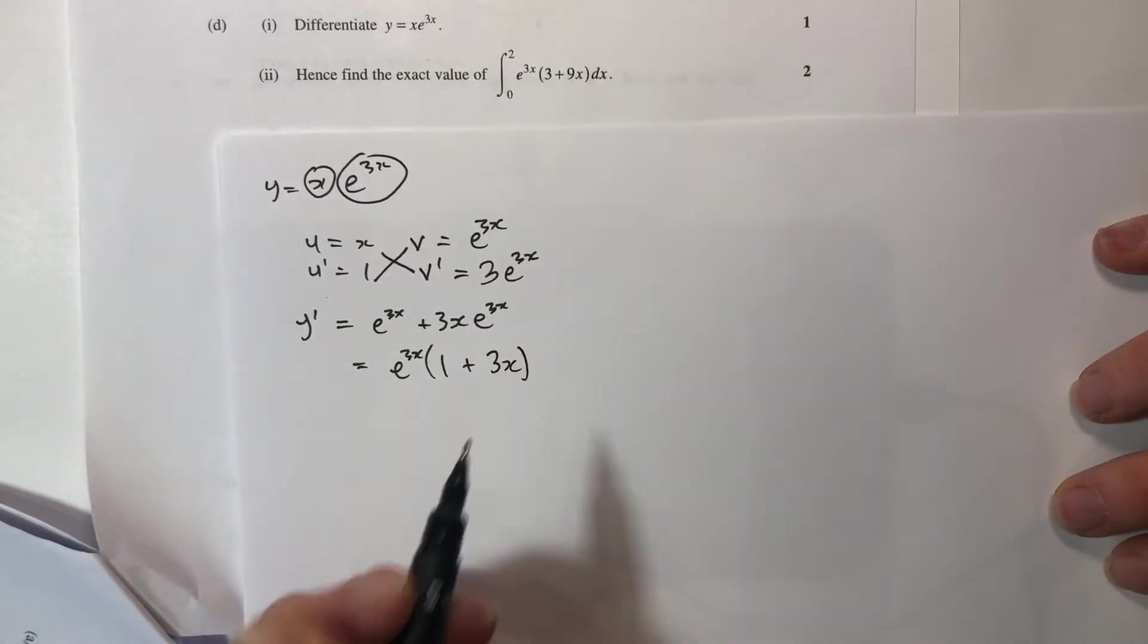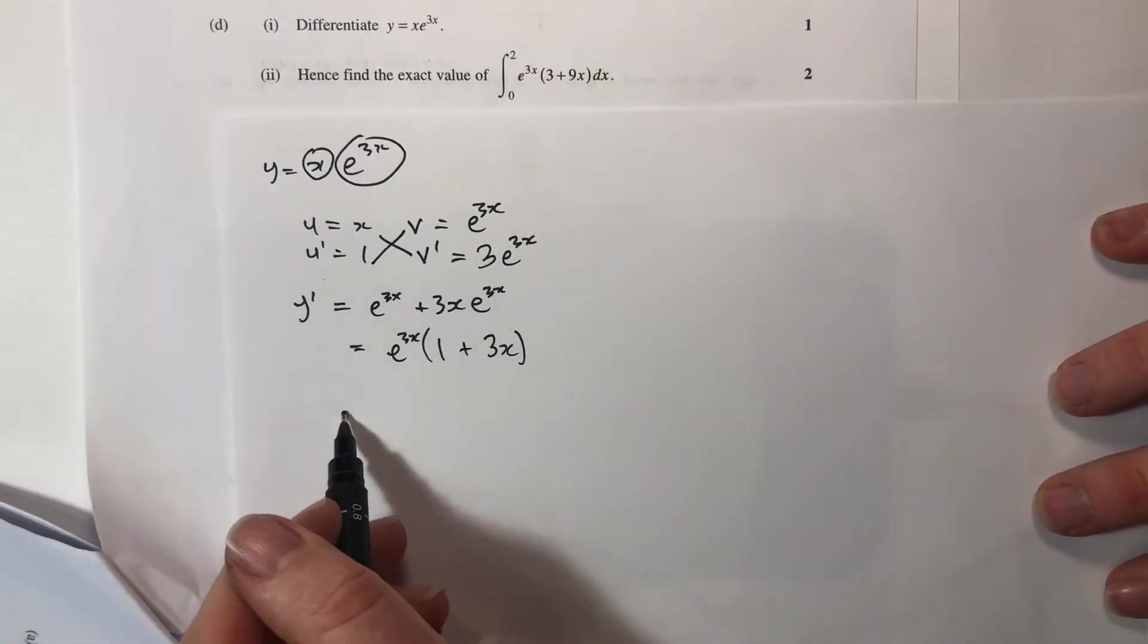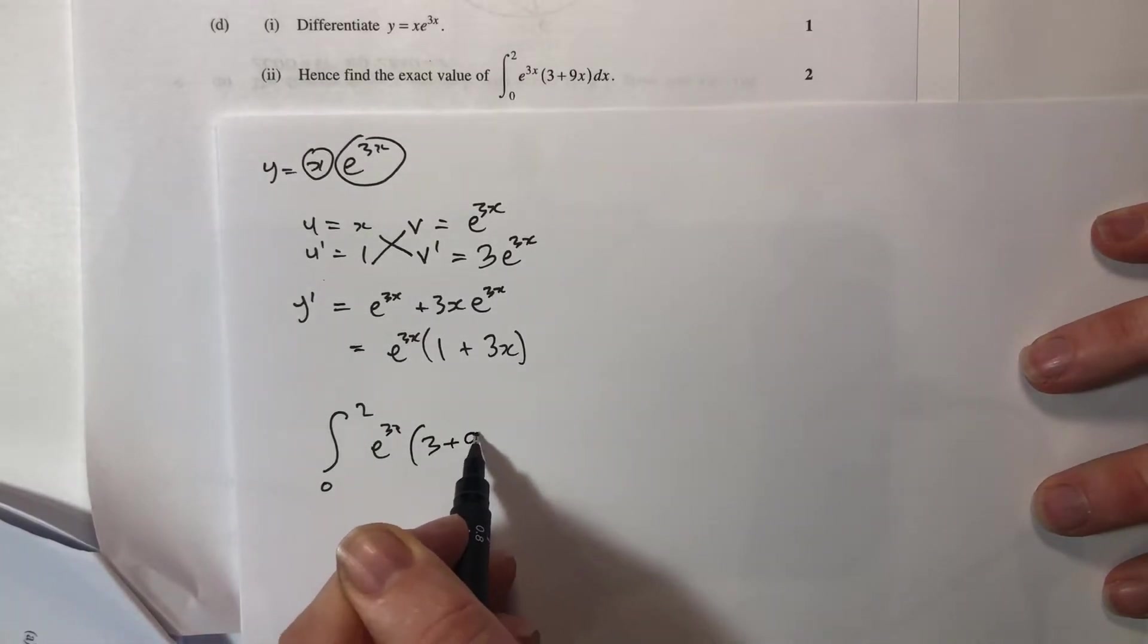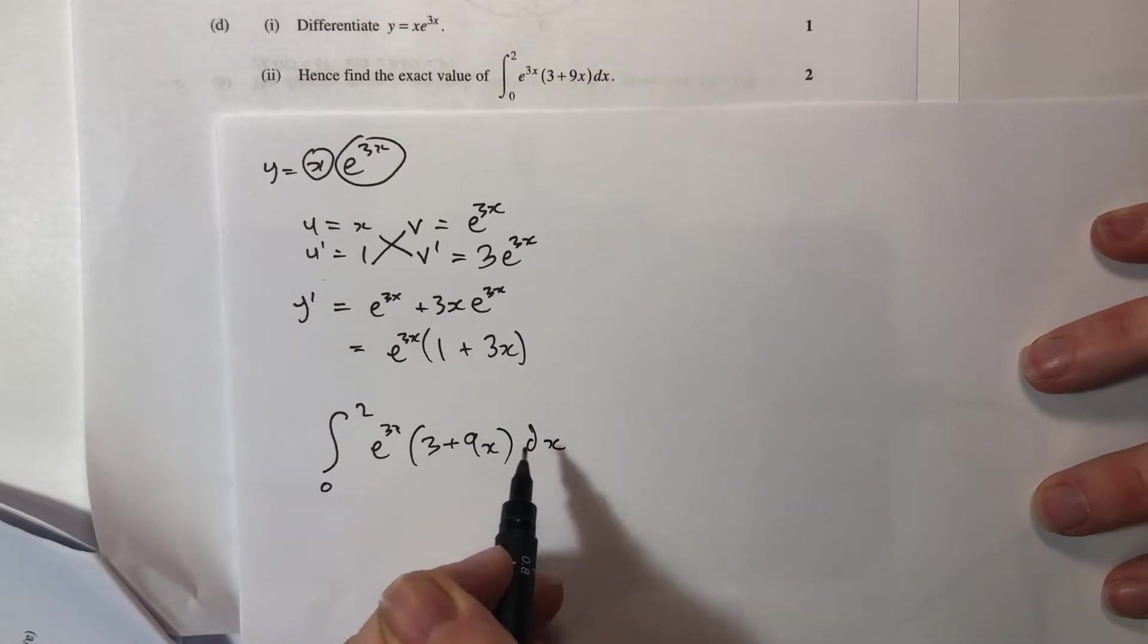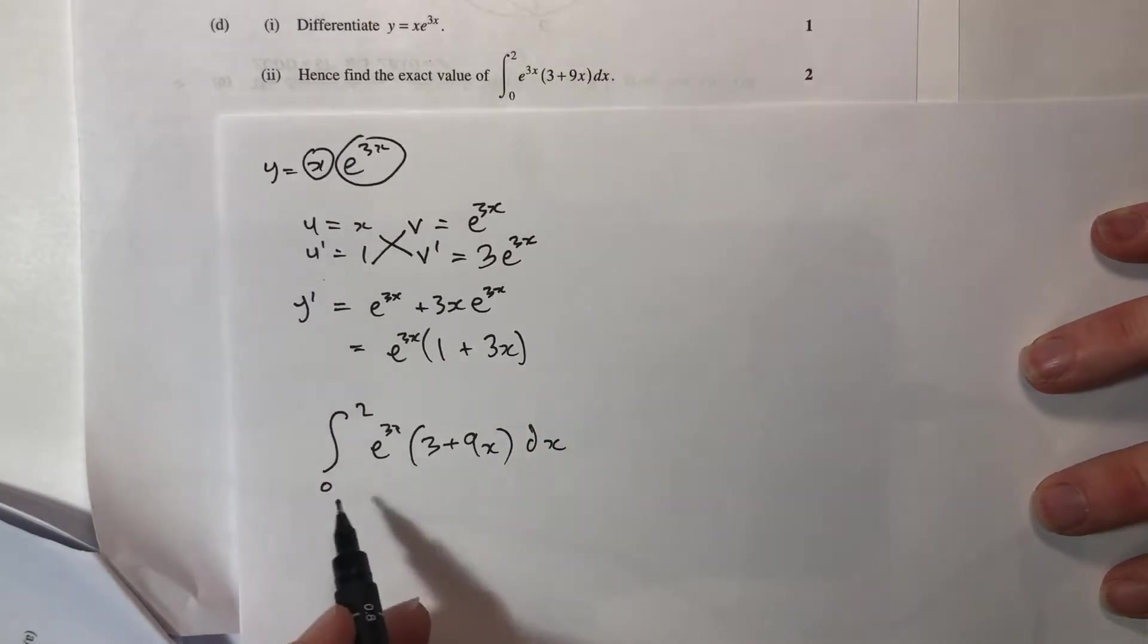That'll be part one. Part two, we're asked to integrate from 0 to 2 of e to the 3x times (3 plus 9x) dx. That looks pretty similar to the one we had except for the fact that there's a three there.